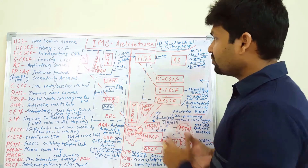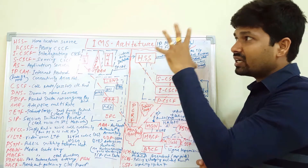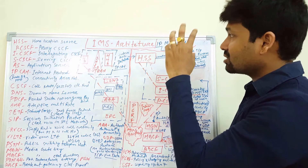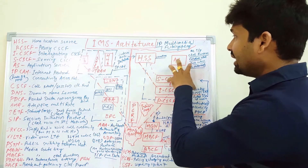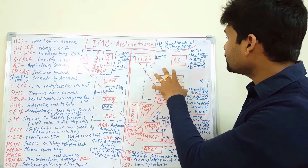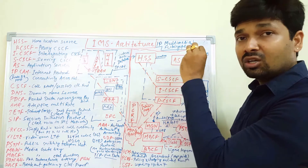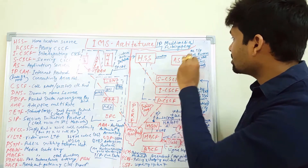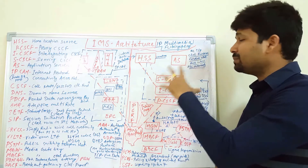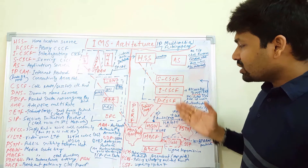The HSS is where we can get the location information of the subscriber and subscriber information. Then the AS, or the application server, which is responsible for all kinds of servers, codecs, AMR codecs, vocoder control, and all kinds of IP control functions.